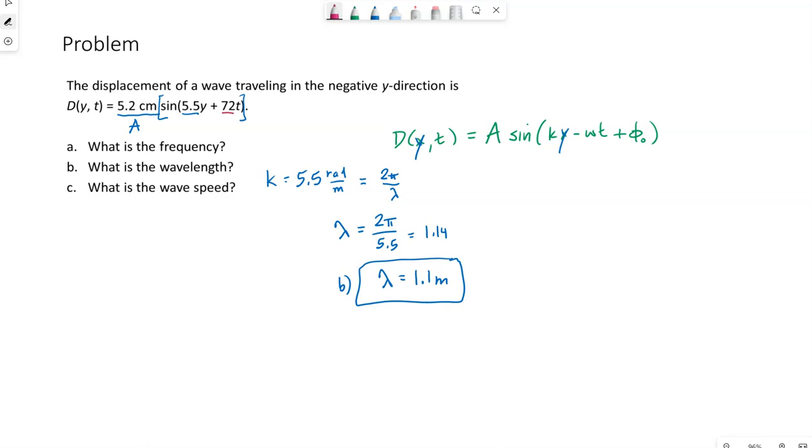Coming back to the equation, the 72 is in front of the t term, so that is our ω. SI units on that would be radians per second. We know ω is 2πf, so we can solve for the frequency here. 72 over 2π equals 11.46 hertz. In terms of two sig figs, that would be 11 hertz.